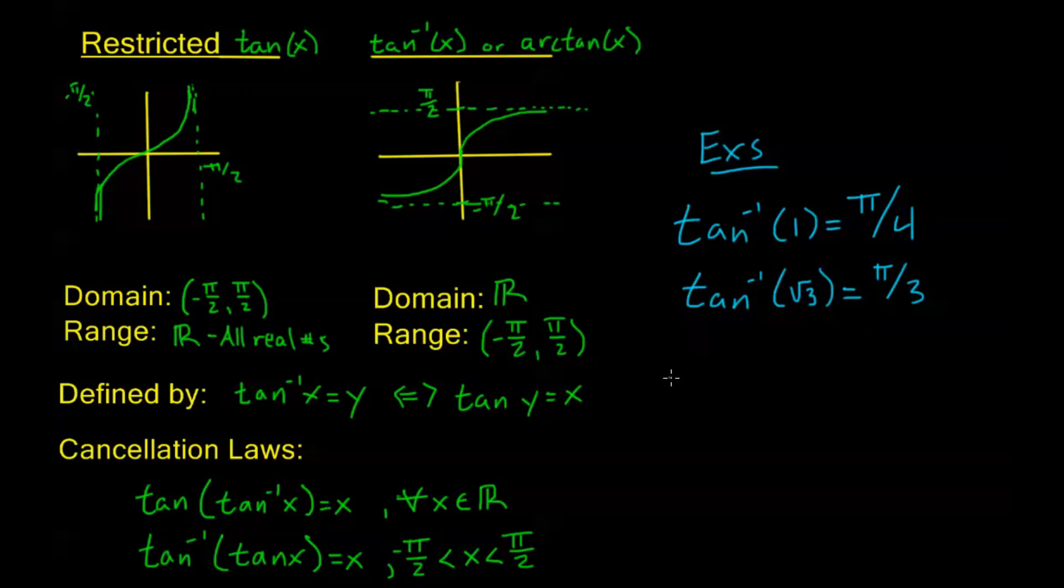Now let's look at our cancellation laws. If I have tangent of tangent inverse of 7 pi over 4, what does this equal? This is my first cancellation law. I can use this cancellation law always. If I ever have a tangent inverse, I can always plug that into tangent. That's going to cancel every single time. This is our first line of our cancellation laws. So this is just 7 pi over 4. Easy peasy.